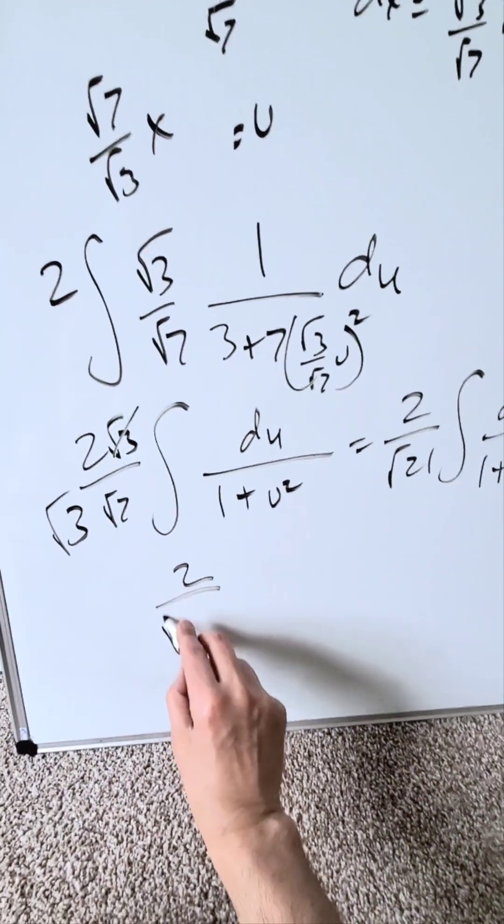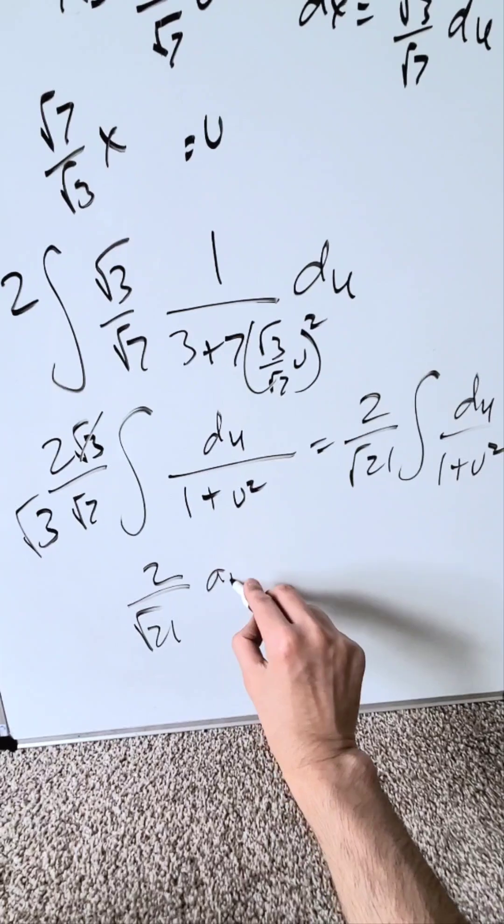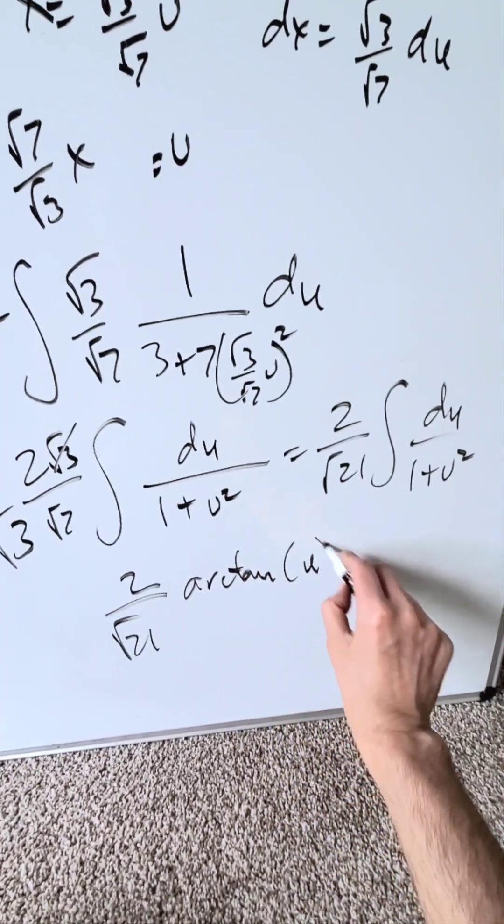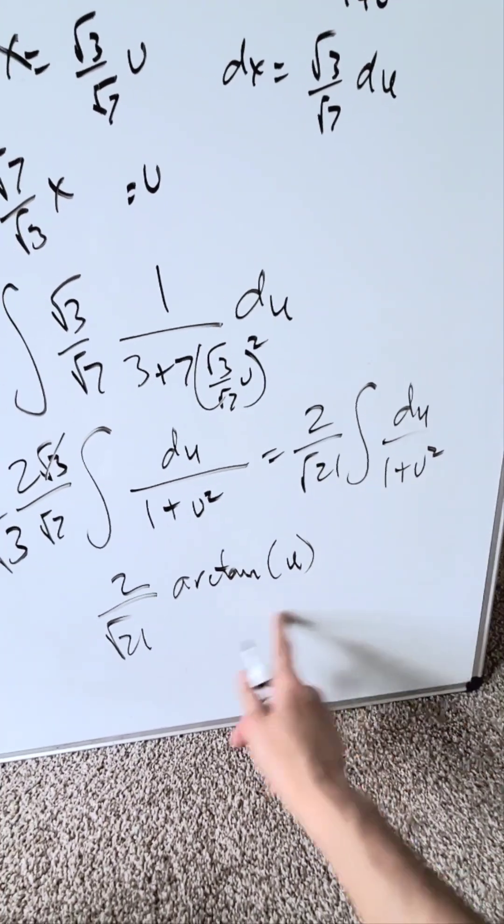When you take this to near completion, you have the arctan u come over here. I have here arctan u from 1 plus u squared, the anti-derivative.